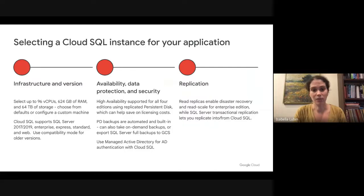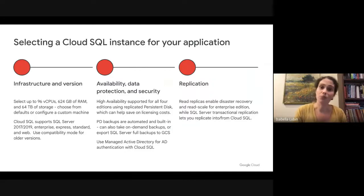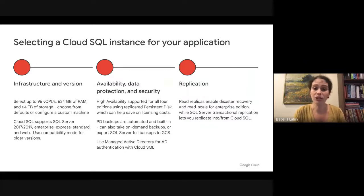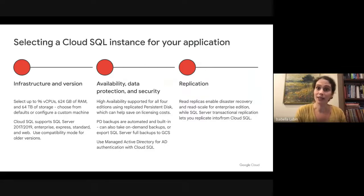You have a number of options when it comes to high availability. High availability is supported for all four editions using replicated persistent disk, which can help you save on licensing costs. PD backups are automated and built-in. You can also take on-demand backups, or use SQL Server built-in full backups to take an export and store that on Google Cloud Storage. If you're using Active Directory for authentication, Cloud SQL integrates with managed Active Directory to provide AD auth directly. You can also create a trust between your on-premises Active Directory and your managed AD environment to leverage the same identities you're using on-prem.